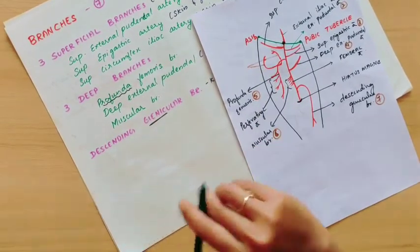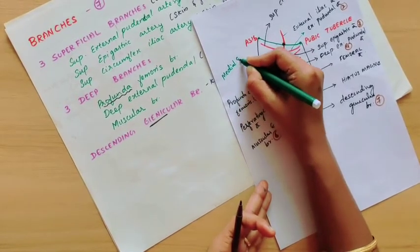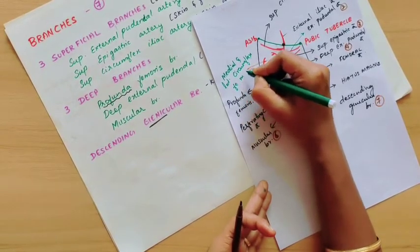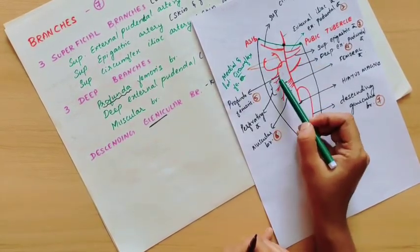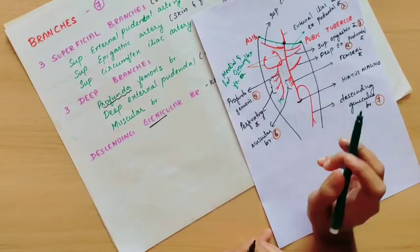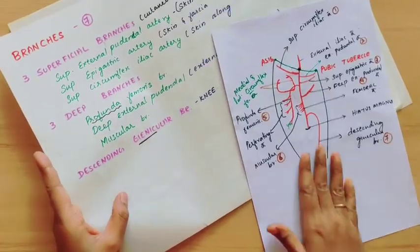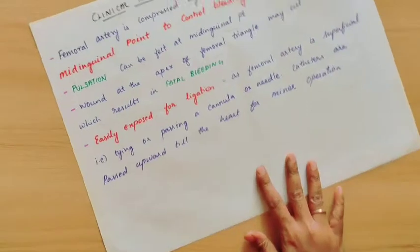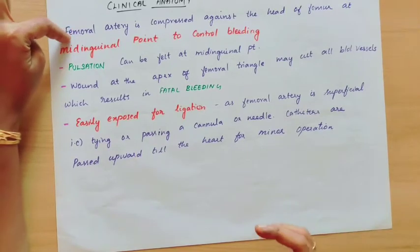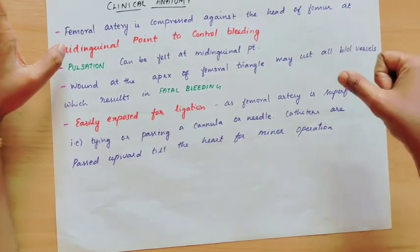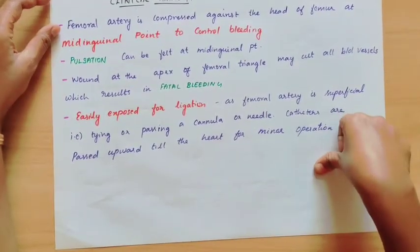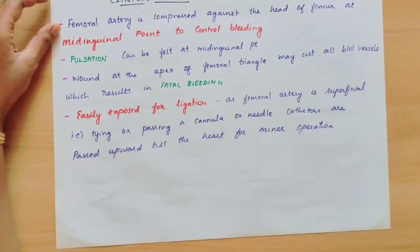So total there are seven branches of the femoral artery: superficial circumflex iliac artery, external pudendal artery, superficial epigastric artery as the three superficial branches; then deep external pudendal artery, profunda femoris artery, muscular branches, and the descending genicular branch. The medial and lateral circumflex arteries are branches of the profunda femoris, not direct branches of the femoral artery.